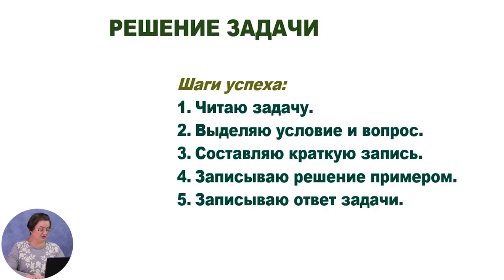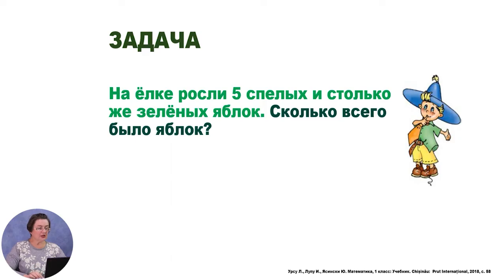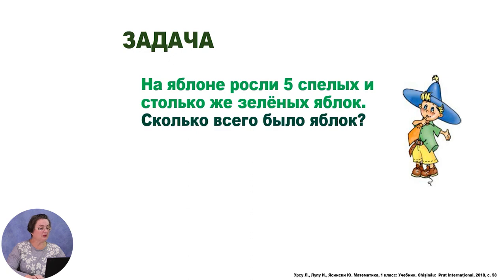И какая же математика без задачи? Незнайка приготовил вам задание. Напоминаю: для успешного решения задачи нужно выполнить следующие шаги — прочитать задачу, выделить условие и вопрос, составить краткую запись, записать решение примером и записать ответ задачи. Читаем задачу: «На ёлке росли 5 спелых и столько же зелёных яблок». Правильно ли Незнайка составил условие? Нет, есть ошибка — яблоки не растут на ёлке. Измени условие, чтобы оно было правильным.